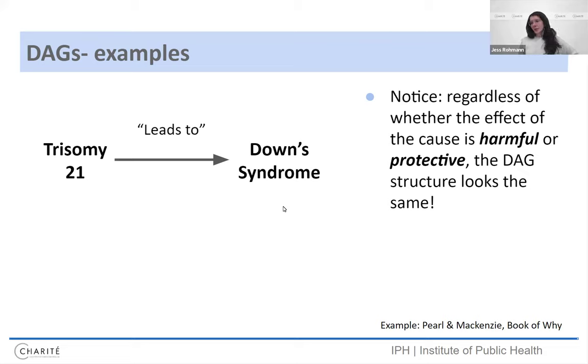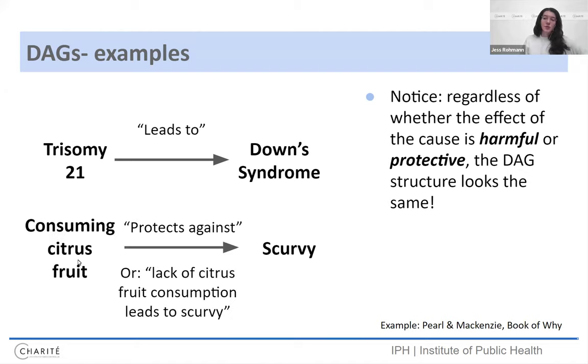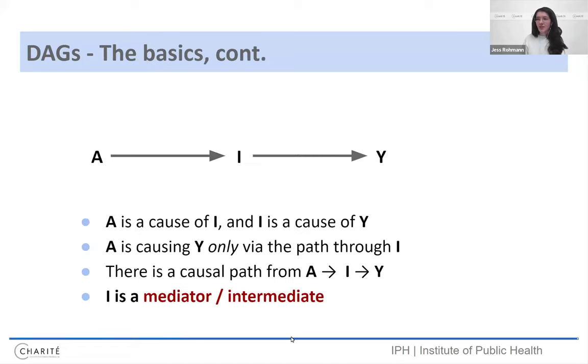Now, notice that regardless of whether the effect of the cause is harmful or protective with respect to the outcome, the DAG structure looks the same. So having an extra 21st chromosome leads to Down syndrome, but consuming citrus fruit protects against scurvy. So you don't have like a sign encoding in these DAGs. It can go in either direction of harmful or protective. It's just saying that the one is the cause of the other. Of course, you could reframe the second one as a lack of citrus fruit consumption leads to scurvy. So no difference there.